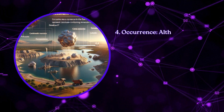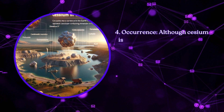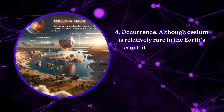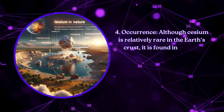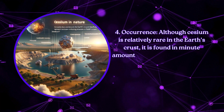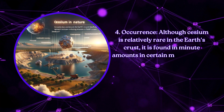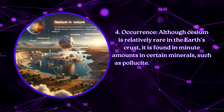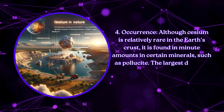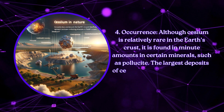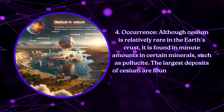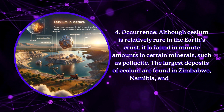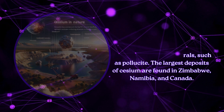Occurrence: Although cesium is relatively rare in the Earth's crust, it is found in minute amounts in certain minerals, such as pollucite. The largest deposits of cesium are found in Zimbabwe, Namibia, and Canada.